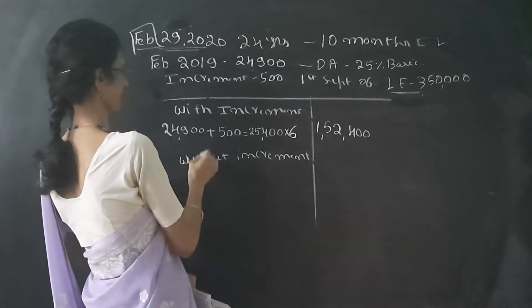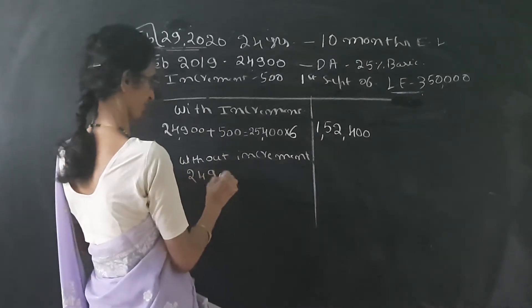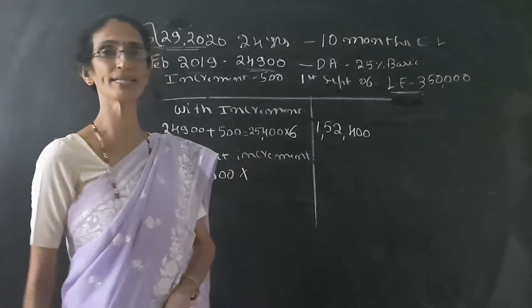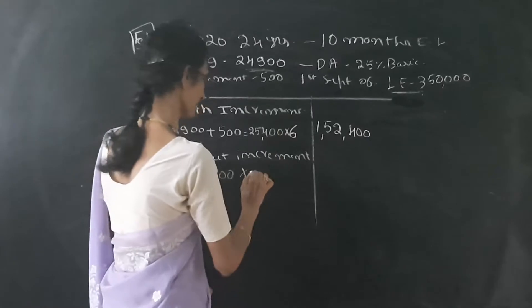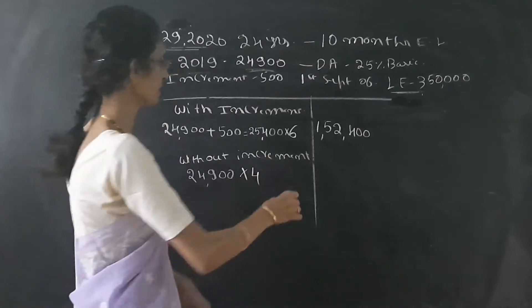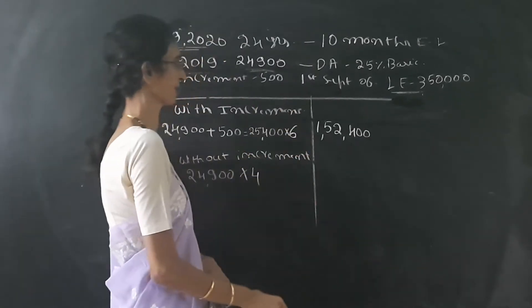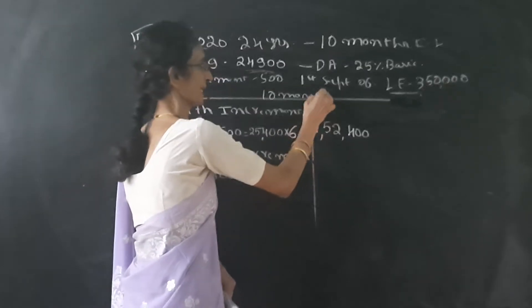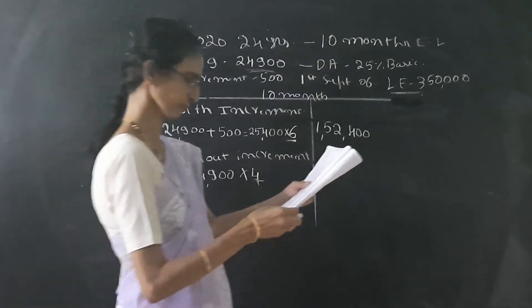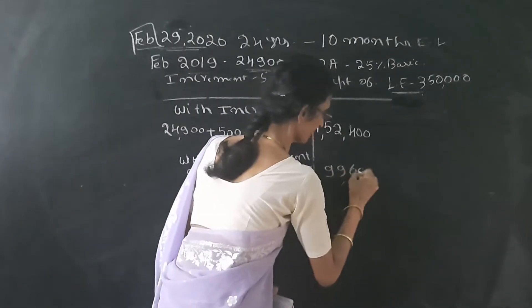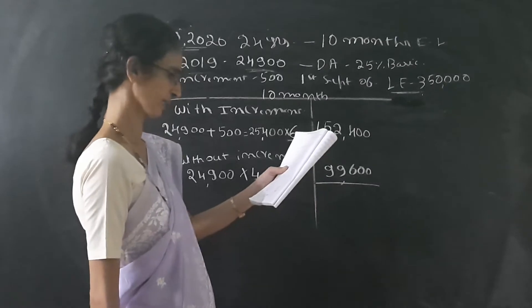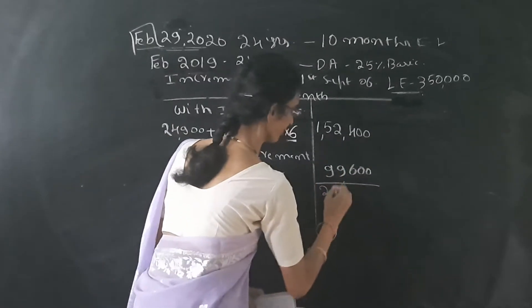Without increment means the salary is 24,900 — the same amount. We are calculating for 10 months total salary, so 10 minus 6 gives us 4 months without increment. So 6 months is with increment, and the remaining 4 months is without increment. We get 99,600 here. Adding both, we get 2,52,000.